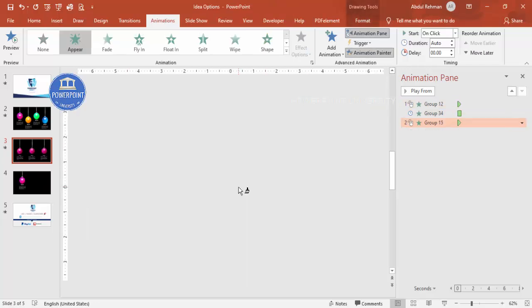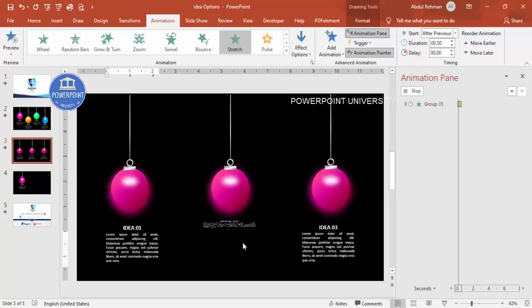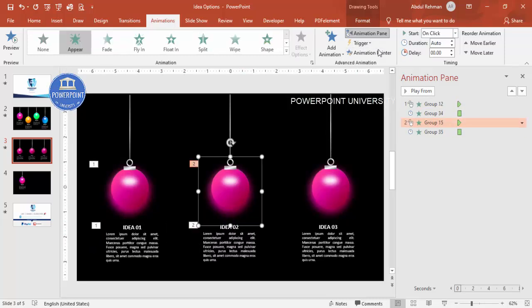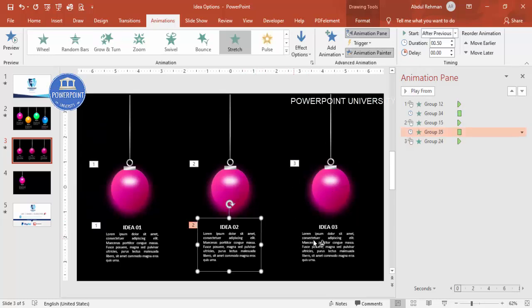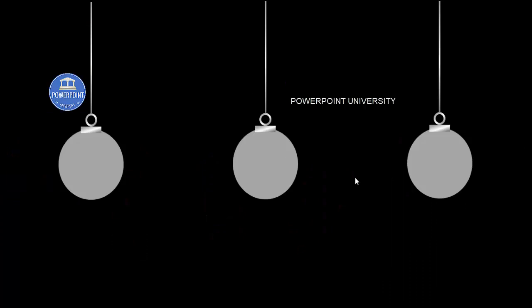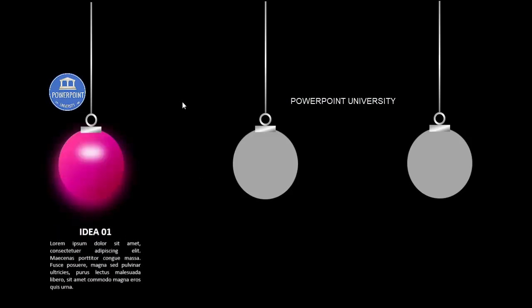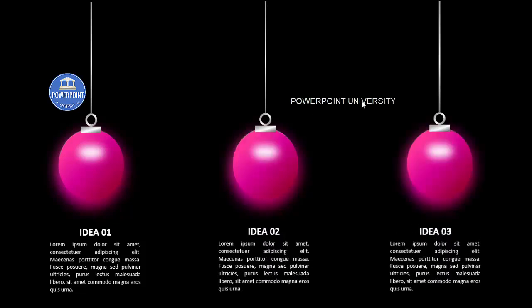Use the Animation Painter to copy the animation to the second bulb, then apply it to the third. Copy the animation for all remaining bulbs. Now all three or four idea bulbs are set: when you click, the first idea glows, then clicking again shows the second, and so on.